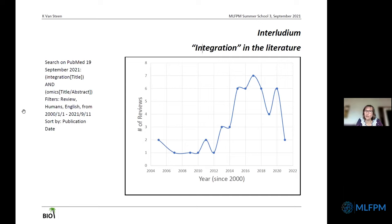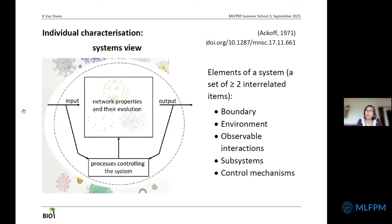Looking in the literature for reviews with 'integration' in the title and 'omics' in the title or abstract, you see an increase after 2012–2014. More data became available, people developed methods to analyze the data, and then there is an abundance of methods. Of course, not all data are equally informative and some are redundant. The more data you collect, the more likely some items will be interrelated.